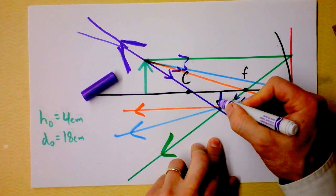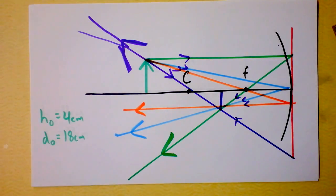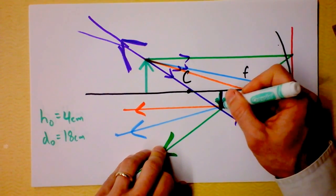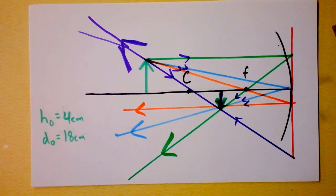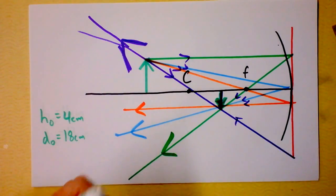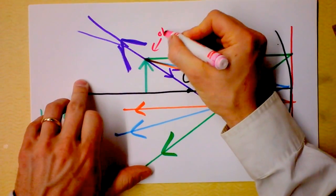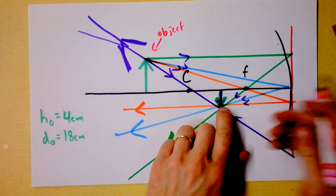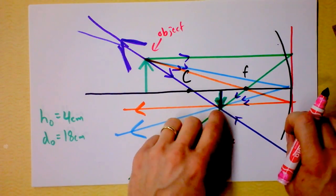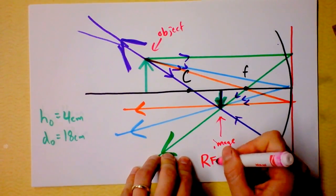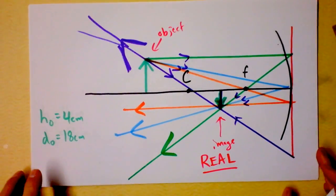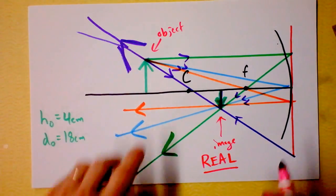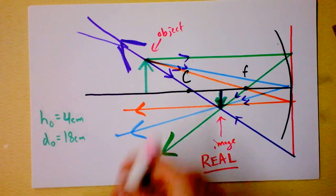If you put a piece of paper right there — a screen, as it were — then you would find an image. So we label these things: you've got your object and you've got your image. Wherever two outgoing rays intersect, you will have a real image. It's real because there's actually light there, and if you put a piece of paper there you would see the arrow or the flower pot or whatever your object is.